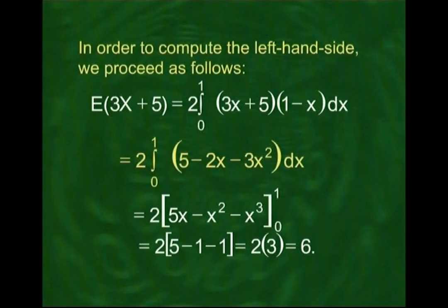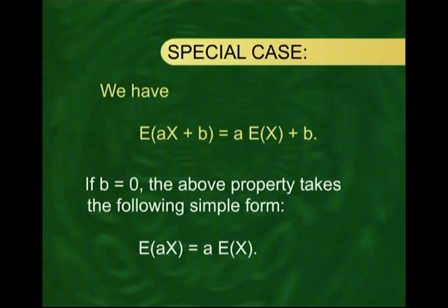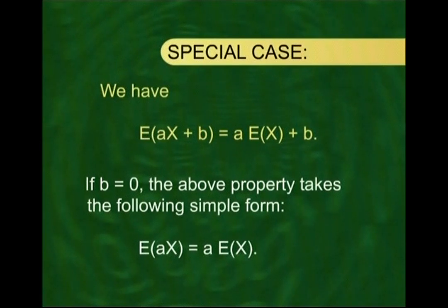I would like to draw your attention to a special case of this property. If we put b = 0, then E(aX + b) = a·E(X) + b simplifies to E(aX) = a·E(X). This means that for E(2x) or E(4x), the constant comes out and simply becomes 2·E(x) or 4·E(x). This is a very simple and convenient rule to remember.